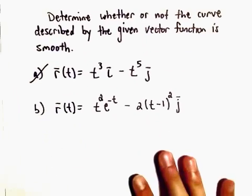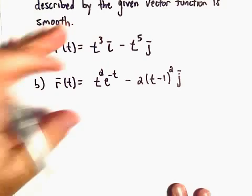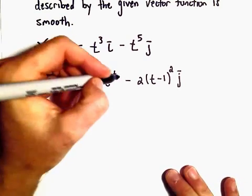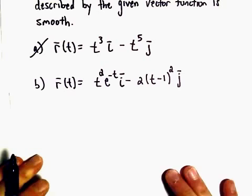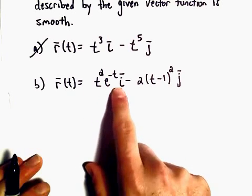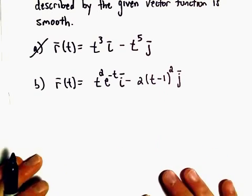Alright, here we're going to look at another example of determining whether or not a vector function is smooth. So in part b, we have r(t) equals t squared times e to the negative t times i minus 2 times t minus 1 squared times j.